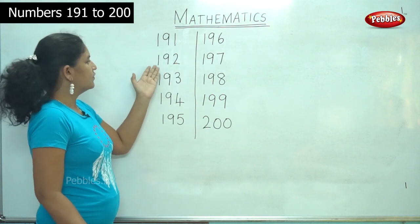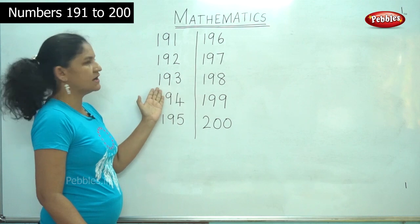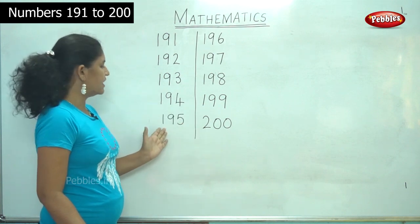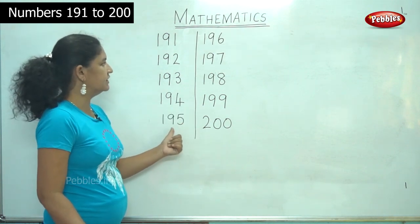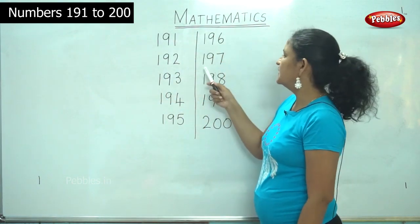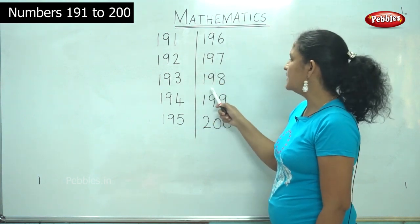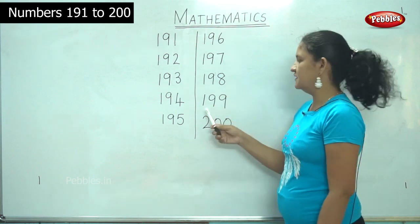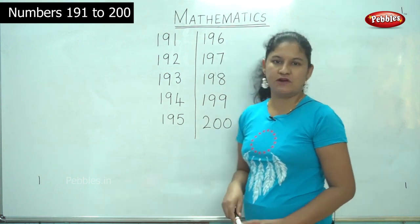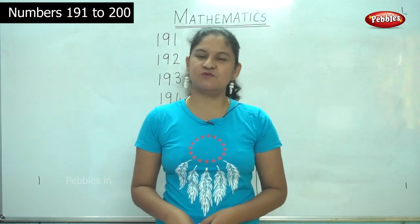191, 191, 192, 192, 193, 193, 194, 195, 195, 196, 196, 197, 197, 198, 198, 199, 199, 200, 200. So now we have seen how to write the numbers from 191 to 200.